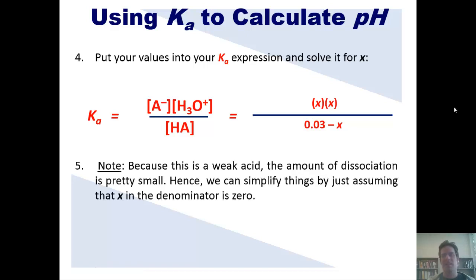Because this is a weak acid, the amount of dissociation is pretty small. Hence, we can simplify things by just assuming that the X in the denominator is 0. I realize that isn't 100% true. X is not 0. But compared to 0.03, X is going to be a very, very, very tiny number.